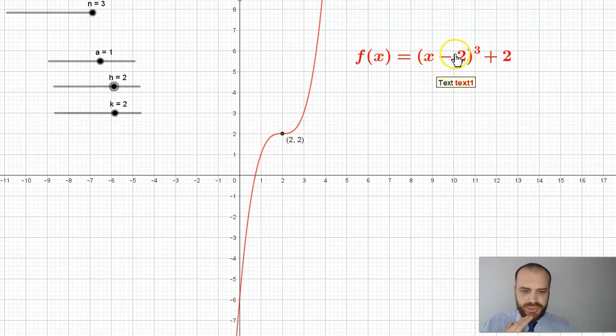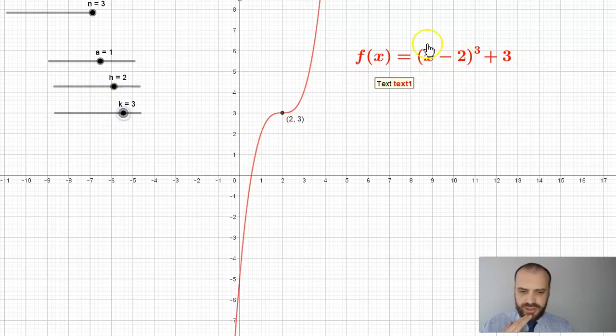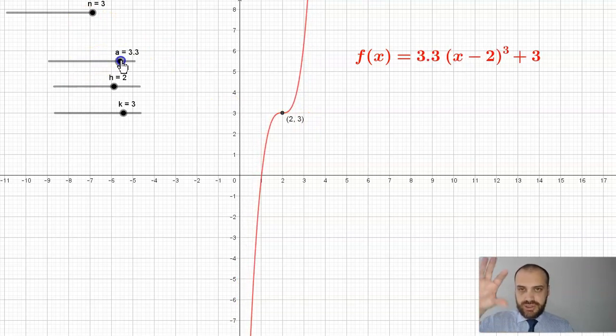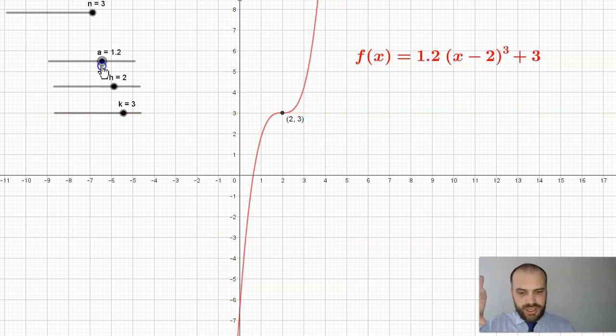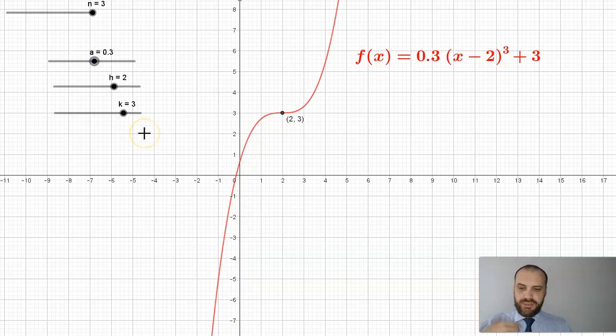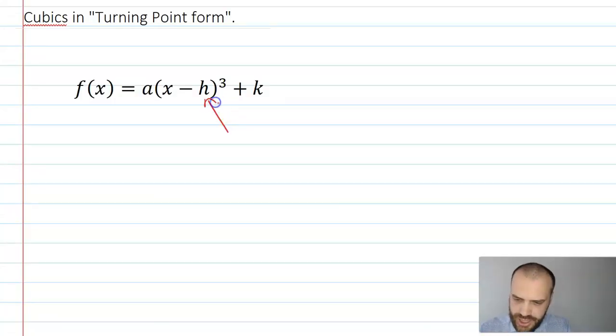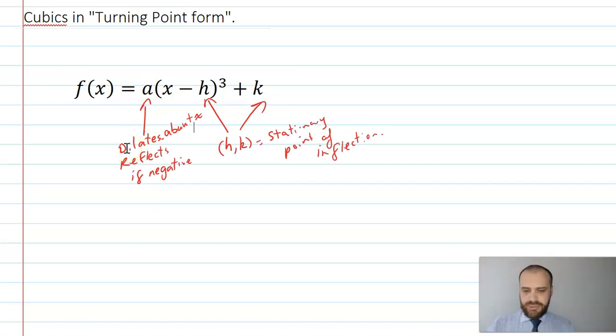I've got this special point here that's represented by these values. If I choose one more value, negative 2, that refers to the 2 here, and positive 3 refers to the 3 here. Now, this a value is going to do what a values do. It's going to stretch that function out, or squish it in, or reflect it when it becomes negative. That is the beginnings of looking at the turning point form of a cubic function.